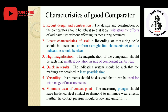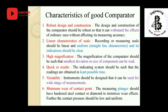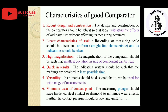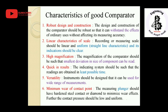Second, linear characteristics of the scale — the measuring scale should be linear and uniform, with a straight-line characteristic, and its indications should be clear. Third, high magnification — the magnification of the comparator should be sufficient that smaller deviations in the size of the component can be read; if the input changes, the output must correspondingly change.